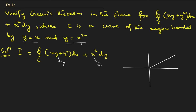And what is y = x²? It is a parabola. So this line is y = x and this curve is y = x². You can see there is a common region inside these two curves. Inside this common region we have to check whether Green's theorem is verified or not.